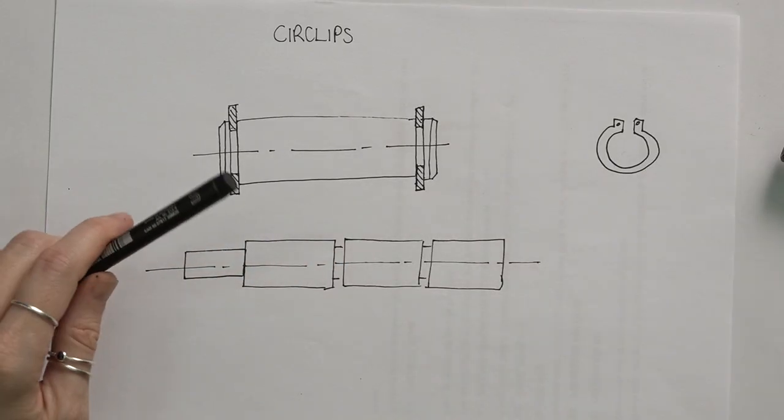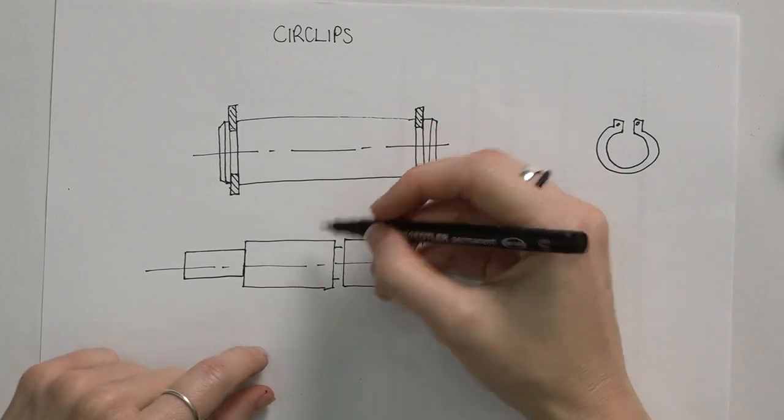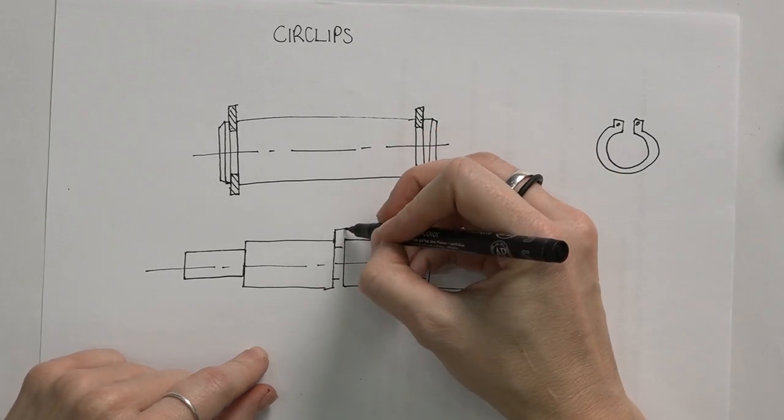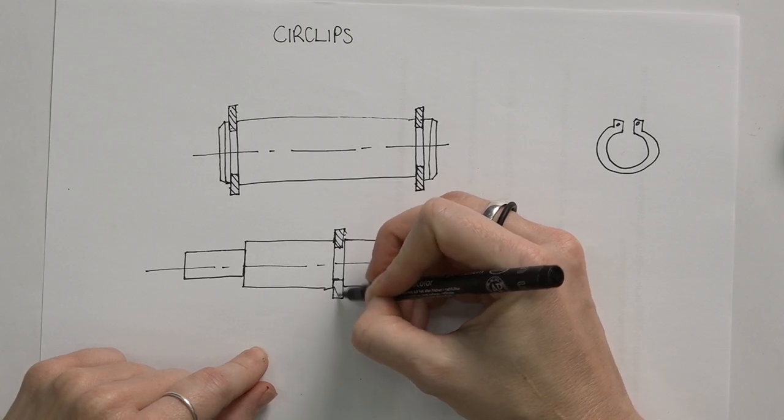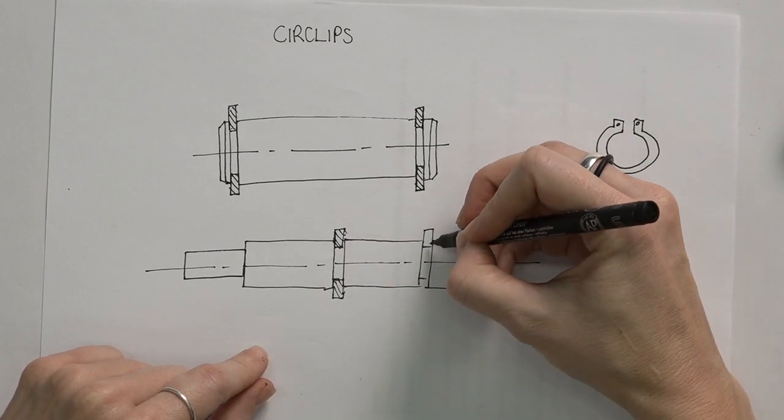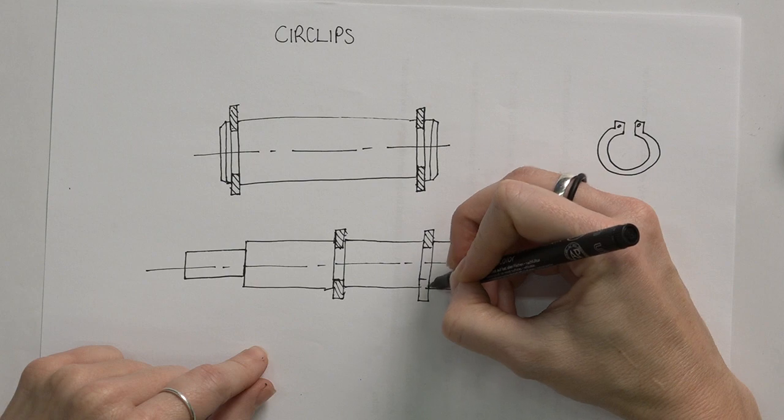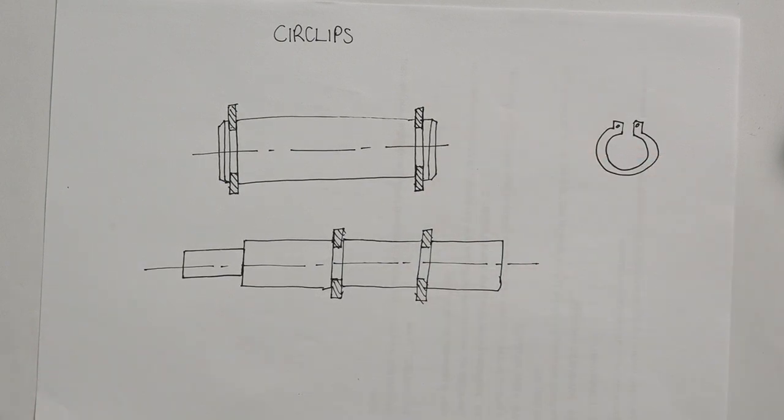So again if we have to draw this in, we just draw in these small little pieces, slightly protruding, fitting exactly into that groove and that will be how we draw in our circlips.